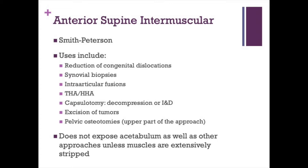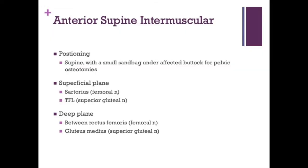Now we'll talk about anatomic approaches for total hip arthroplasty. The anterior supine intramuscular approach, also known as the direct anterior or minimally invasive approach, carries the eponym Smith-Peterson. It's becoming more commonly used for primary THA, though it does not expose the acetabulum as well as other approaches unless muscles are extensively stripped. It's not truly extensile, although extensile modifications are described, including releasing the gluteal muscles off the iliac crest, and curving the incision distally to become a lateral femoral approach.